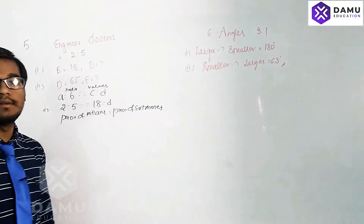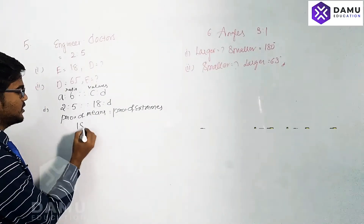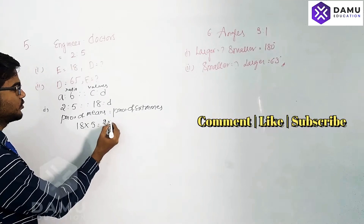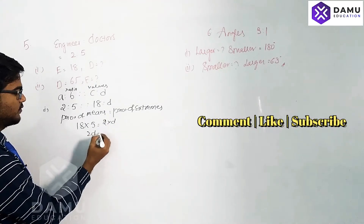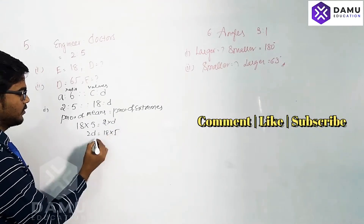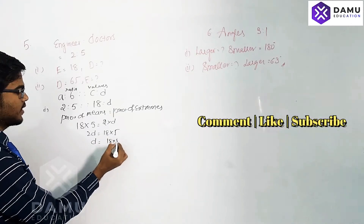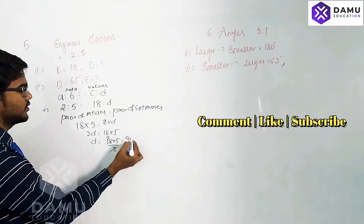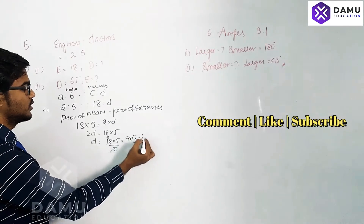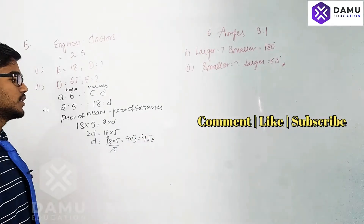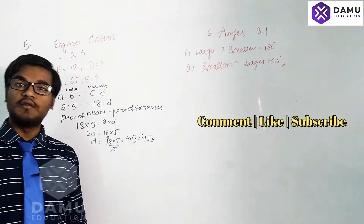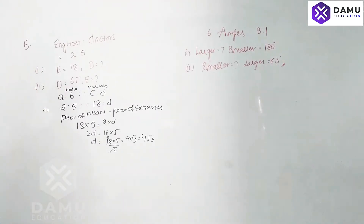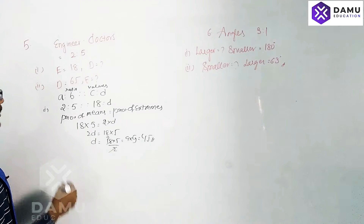Product of means equals product of extremes: 18 into 5 equals 2 into D. So 2D equals 18 into 5, meaning D equals 18 into 5 divided by 2. That gives us 9 into 5, which is 45. So the number of doctors will be 45.